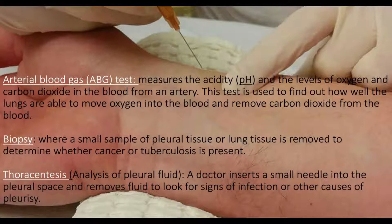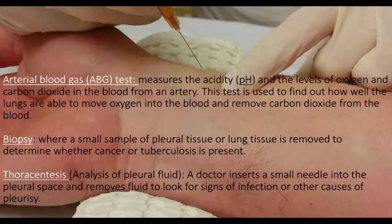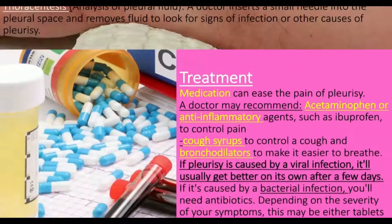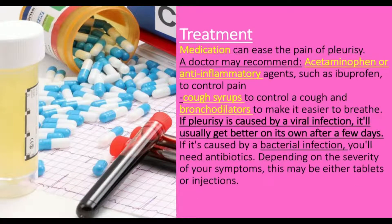An arterial blood gas test measures the acidity and the levels of oxygen and carbon dioxide in the blood from an artery, used to assess how well the lungs move oxygen into the blood and remove carbon dioxide. A biopsy involves removing a small sample of pleural or lung tissue to determine whether cancer or tuberculosis is present. In thoracentesis, a doctor inserts a small needle into the pleural space and removes fluid to look for signs of infection or other causes.